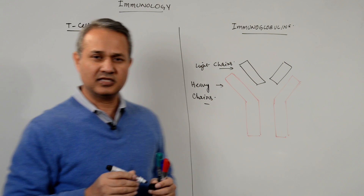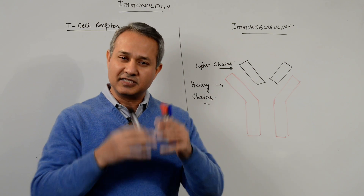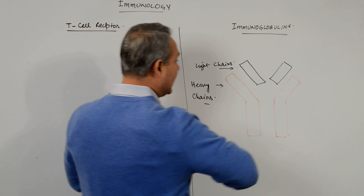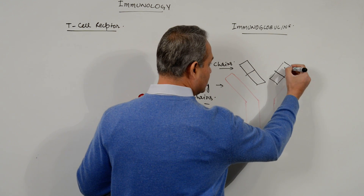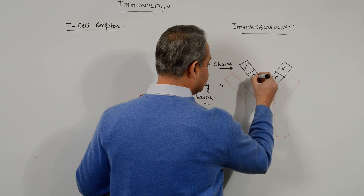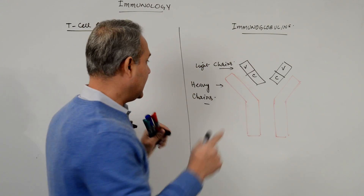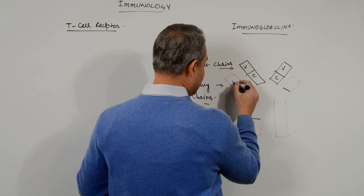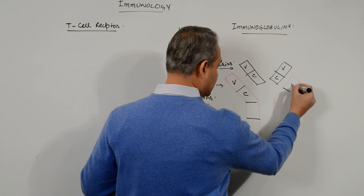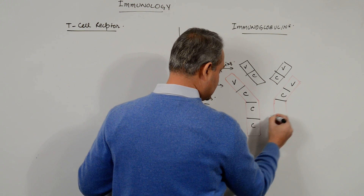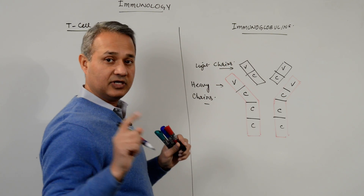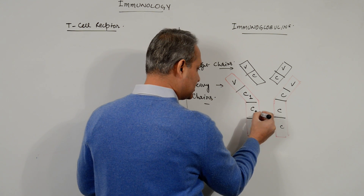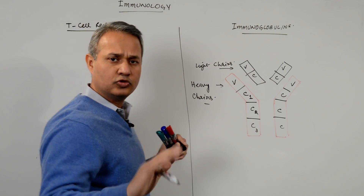Now, this structure is two dimensional on the board, but actually it is a 3D structure in which antigens bind. The light chains are further divided into variable and constant regions. Heavy chains are also divided into variable, then constant 1, constant 2, and constant 3 — so two to three constant regions in the heavy chain.